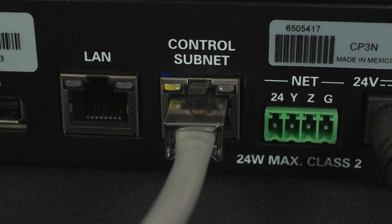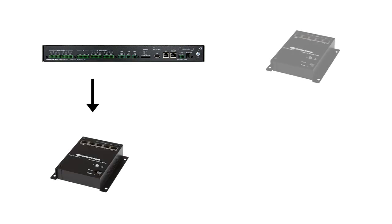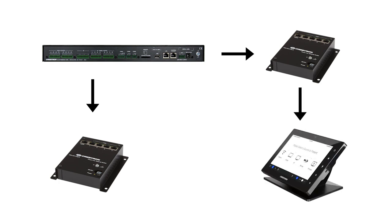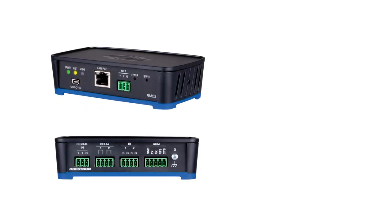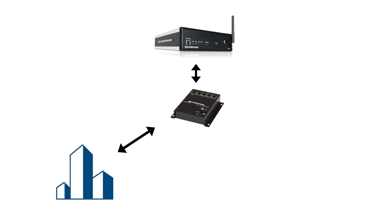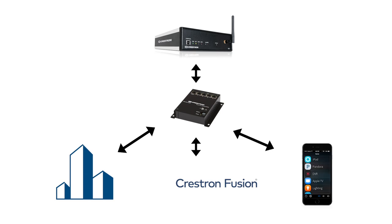All 3-series processors communicate via Ethernet on a standard Ethernet network. Ethernet is very important to the modern Crestron control system — many devices we communicate with use Ethernet, including other Crestron devices and many third-party devices. The 3-series processors support many Ethernet standards such as native BACnet (Building Automation Control Network), IPv6, and SNMP. Devices on Ethernet can be connected to building management and monitoring software such as Crestron Fusion, and Ethernet also allows control by mobile devices. Ethernet is so important that there is a whole other tutorial devoted to it.